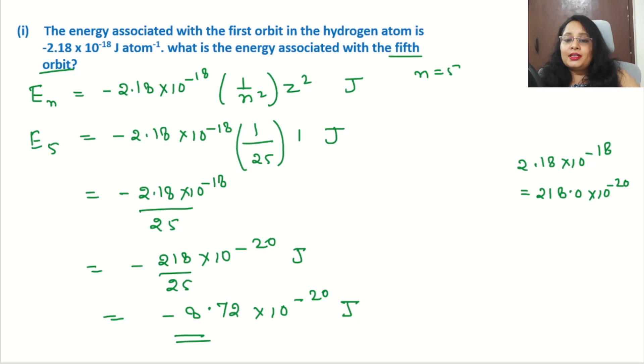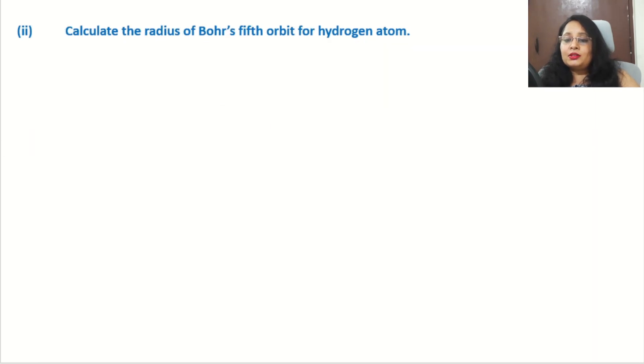Let's come to the second part of the question: Calculate the radius of Bohr's fifth orbit of hydrogen atom. Again n = 5, we need to calculate the radius.